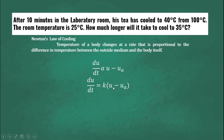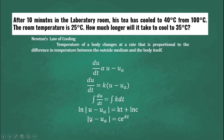To simplify, du over dt equals k times (u minus u sub a). Integrating both sides, the integral of du over dt equals the integral of k dt, giving us ln|u minus u sub a| equals kt plus ln C. Simplifying, |u minus u sub a| equals Ce raised to kt. Transposing u sub a to the right side, our final equation is u equals u sub a plus Ce raised to kt.